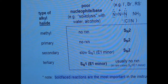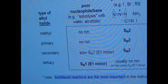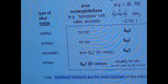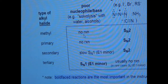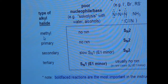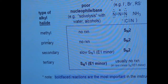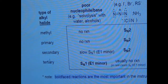The top row is poor nucleophile/base — the typical solvolysis reaction with water or alcohols. For solvolysis, it works best on tertiary. It also works on secondary as a slow SN1, with E1 always a minor byproduct. It never happens on primary and methyl because of terrible carbocation stability — secondary and tertiary have carbocation stability, with tertiary being best.